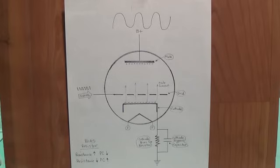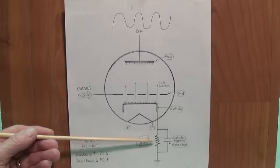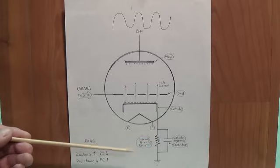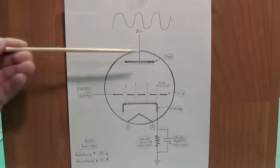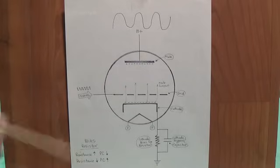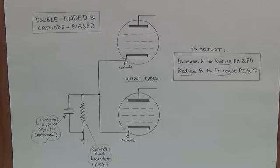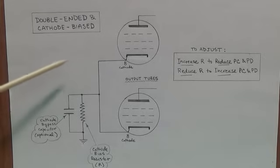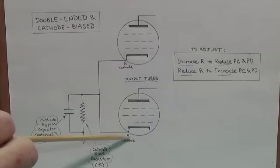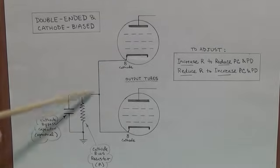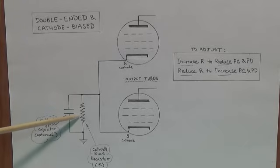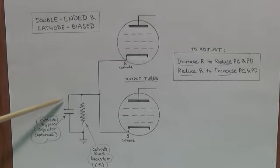In the first video, we discussed how to bias single-ended output tubes that were cathode biased, and we saw that the first step was to measure very accurately what is the resistance of the cathode bias resistor. Step two was what is the voltage drop across the resistor. Then we used that and Ohm's Law to calculate the plate current. Then we multiplied it by the plate voltage to get the plate dissipation. I hope that all sounds familiar. The only difference being that in the double-ended amps that are cathode biased, the cathodes, which are pin eight on the tubes, if they are 6V6s, 6L6s, or 5881s, they share a cathode bias resistor.